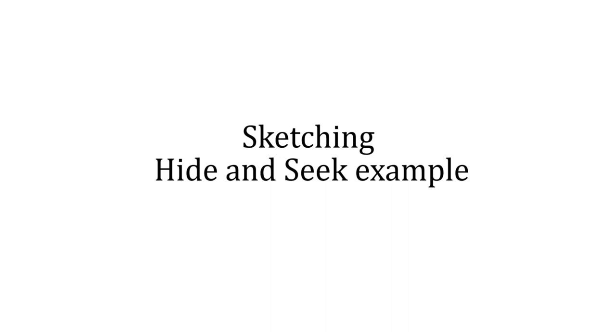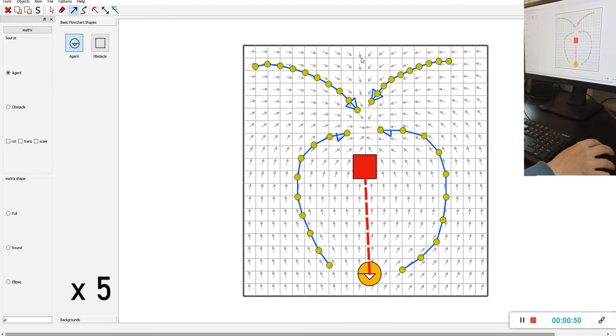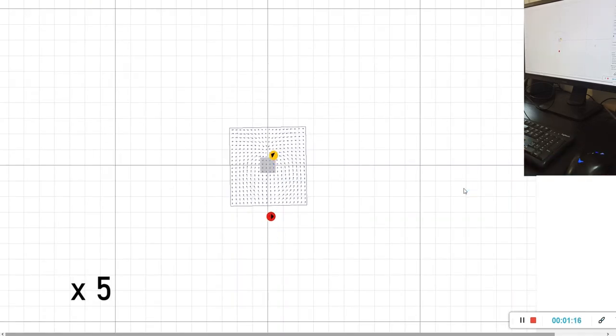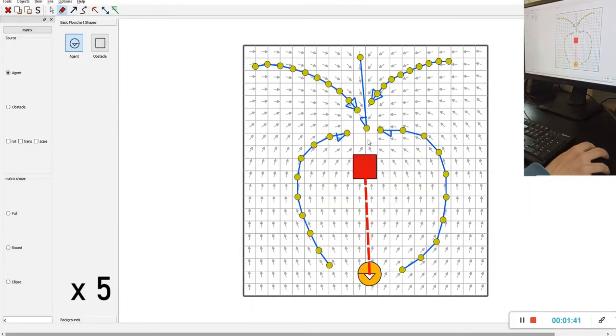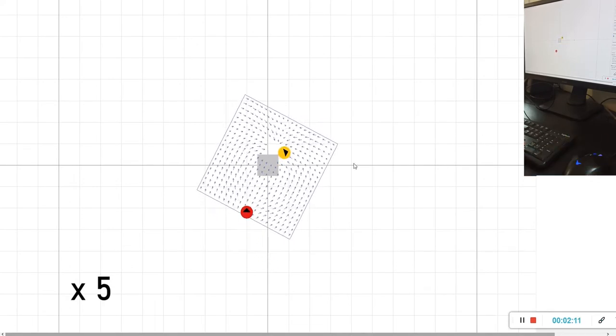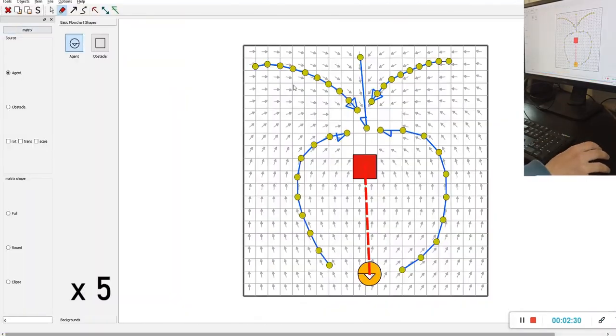Sketching interaction fields. We will now demonstrate the use of the approach to iterate through a complex hide-and-seek scenario, where an agent will try to automatically hide from the user behind objects and other characters. We developed a simple interface, the interaction field editor, in which users can intuitively sketch an interaction field.